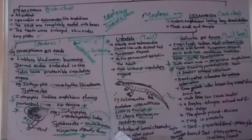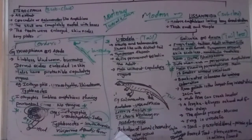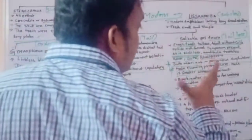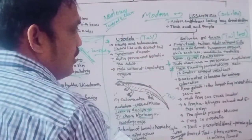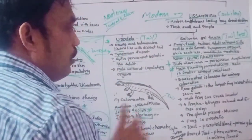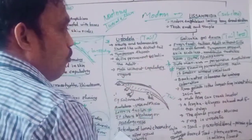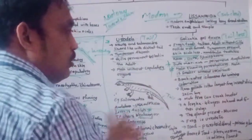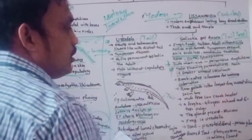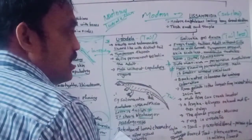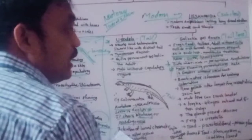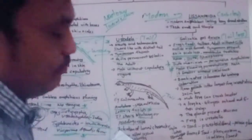Class Amphibia is divided into two subclasses: Stegocephalia — all extinct — and Lissamphibia. Lissamphibia is divided into three orders: Gymnophiona, Apoda, Urodela, and Salentia or Anura. Please take note of all this.